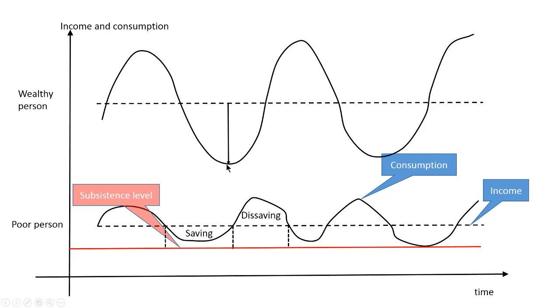And deviation of consumption from income can be pretty big. Like here, for example, a wealthy person would be comfortable consuming at this level, because this level is much higher than the subsistence level.